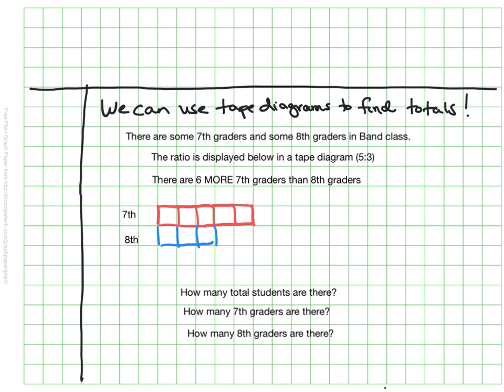So if we know that there are some seventh graders, we don't know how many, and some eighth graders, again we don't know how many, in the band class and we know that there's a ratio of five to three, that means the first number seventh graders is five, the second number eighth graders is three.